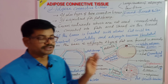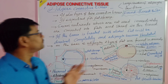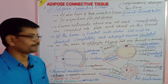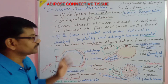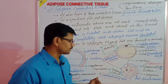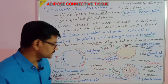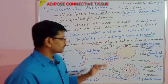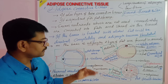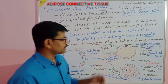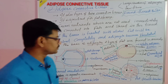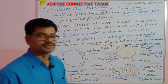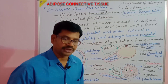In summary, adipose tissue is a type of loose connective tissue mainly meant for storage of fat. It is very useful in children and infants for metabolic activities, and in adult organisms it is useful as a thermal insulator. Thank you.